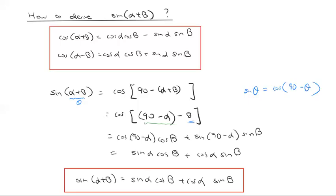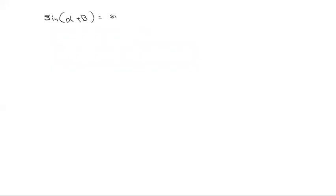Now you can probably see what's coming next. We can skip ahead since we already know that sine of alpha plus beta is sine alpha cos beta plus cos alpha sine beta. So how do we derive sine of alpha minus beta? That's probably quite easy, especially given what we've already done.